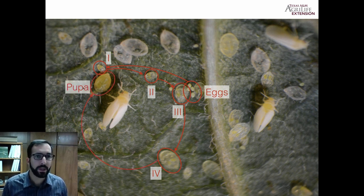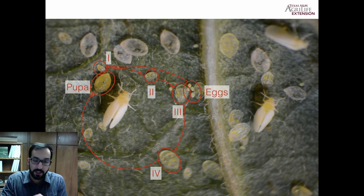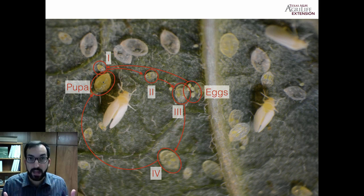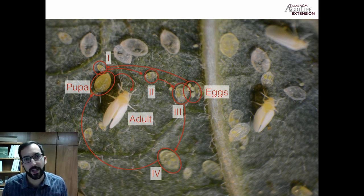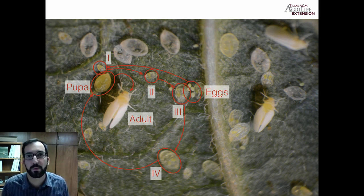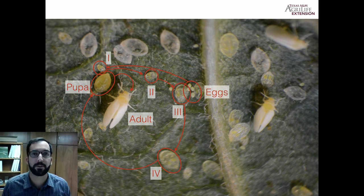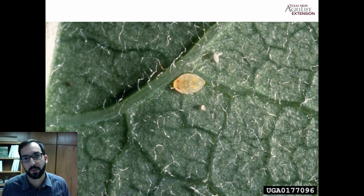After the fourth instar, we get the pupa, where the whitefly immature inflates — it becomes quite a bit bigger and more opaque, so it's a lot easier to see with the naked eye. Then we get the adult. Those white shell-like transparent things are pupal casings — basically the husk or cocoon casing of the whitefly after the adult has emerged. You can see those two red eyes in the pupa, indicating it's about to become a new adult to lay eggs all over your greenhouse.